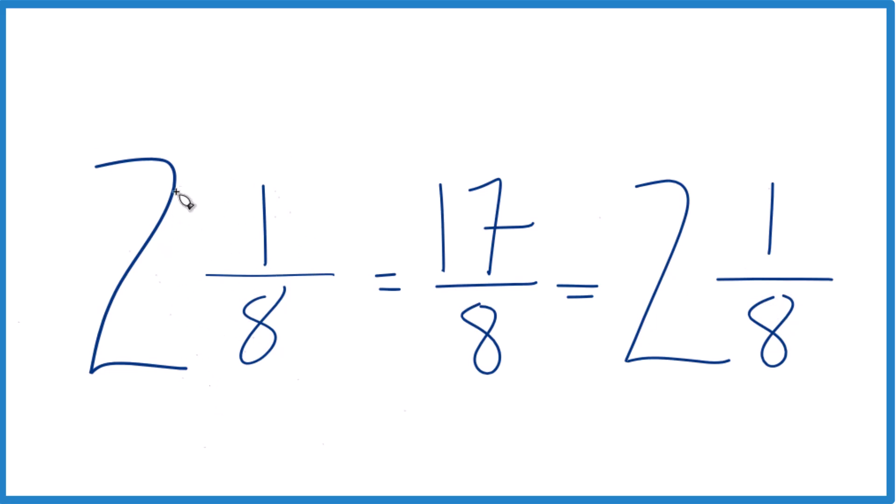Note that these are equivalent, 2 and 1/8. That's equal to 17/8. They have the same value. It's just that this is represented as an improper fraction, and this is our original mixed number.